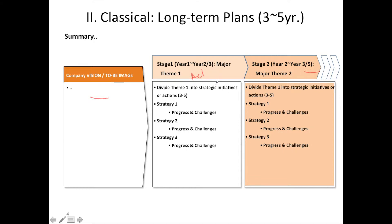You can divide each theme into various strategic initiatives. For example, one initiative could be having a proper due diligence process to search for bakeries. Another initiative could be increasing your profitability to have enough cash. Similarly, you do it for stage 2 or stage 3 and so on.